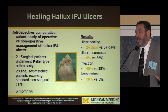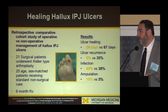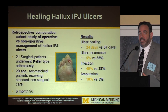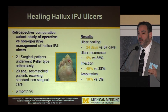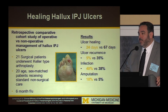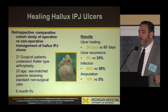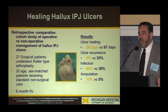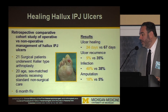Hallux interphalangeal joint (IPJ) ulcerations are very common, often due to hallux limitus or arthritis at the first metatarsophalangeal joint. This retrospective comparative cohort study compared one provider who preferred surgical management of IPJ ulcers versus another who preferred conservative management. Twenty patients underwent surgical management and 20 underwent conservative management. With admittedly only a six-month follow-up, the surgical patients healed faster, had less recurrence, similar infection rates, and a slightly higher amputation rate — though it's a small study.